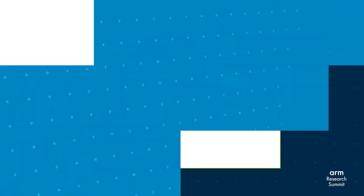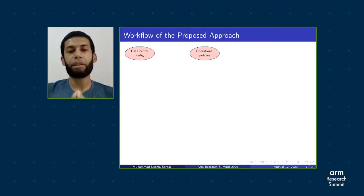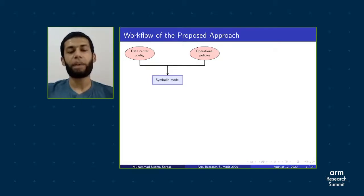Here is our workflow. The first component is the data center configuration, which represents the behavior of all entities involved in the attestation mechanism. Then there are operational policies, which represent the cryptographic protocol in the attestation mechanism. Based on these, we generate a symbolic model of the attestation in ProVerif programming language, which is a dialect of applied pi calculus.